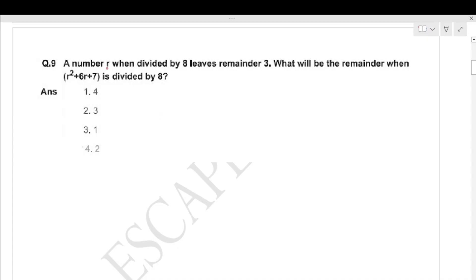Next question: r is equal to 8 over 3. r square plus 6r plus 7 divided by 8. Substituting 8 over 3 squared, 6 into 8 over 3 plus 7. This equals 9 plus 18 plus 7, which is 34 by 8. 8 over 3 divided by 8 over 3 equals 4. Fourth option is correct.